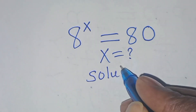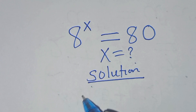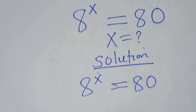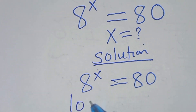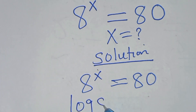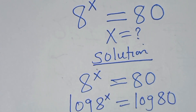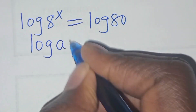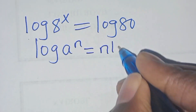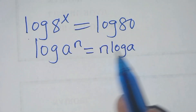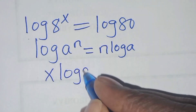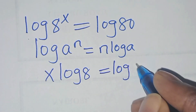Solution: we have 8 to the power x, this is equal to 80. To find the value of x, we introduce logarithm on both sides. Applying the power rule property, log 8 to the power x can be expressed as x log 8, and this is equal to log 80.